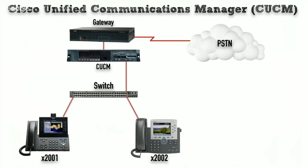Back in the day, companies had a private branch exchange — a privately owned phone switch — which gave them economies of scale. For example, at a local university we had about 6,000 phones but only about 200 lines coming in from the central office. Instead of buying a phone line for everybody, we could share those lines because not everyone calls out to the PSTN at exactly the same time.